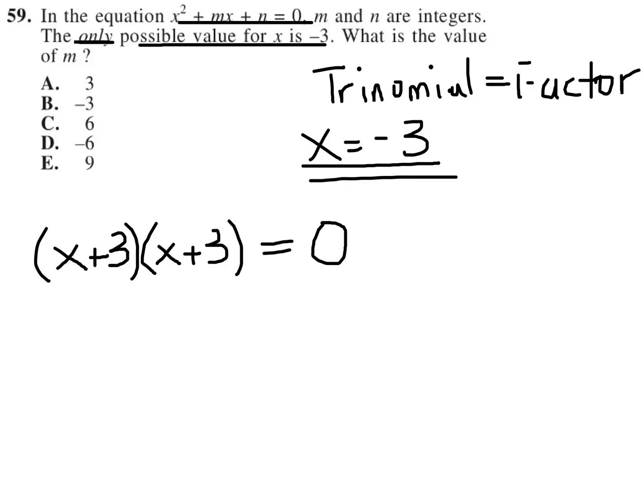Because, hopefully you remember from factoring trinomials, when you factor a trinomial in order to solve it, you would set each individual binomial here equal to 0, and in both cases we would get negative 3, which would fit this idea that the only possible value of x is negative 3.